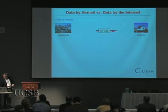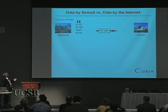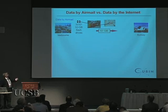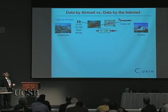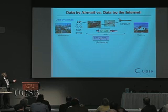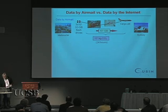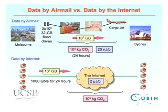Sydney is about 1,000 kilometres from Melbourne. You could put 3×10^5 32-gigabyte flash drives in the mail, load them into a 747 cargo hold, and fly them to Sydney — using about 1,000 kilograms of CO2 in 24 hours. Transferring the equivalent 10^7 gigabytes by internet at a terabyte of bandwidth would also take 24 hours, but would generate 10^5 kilograms of CO2 — more than flying the flash drives on a cargo jet.